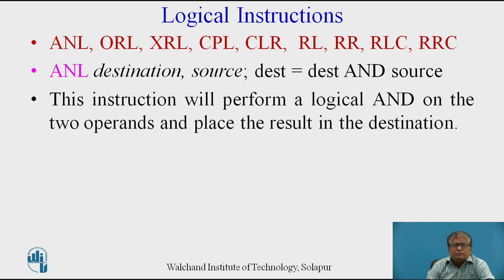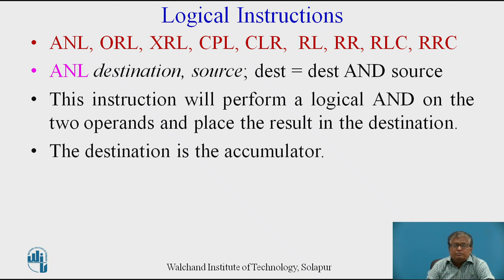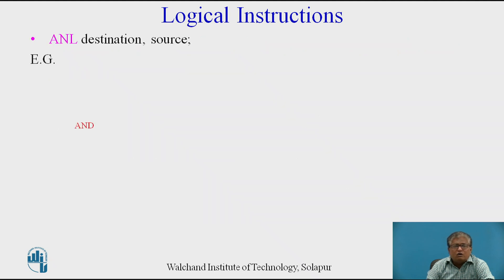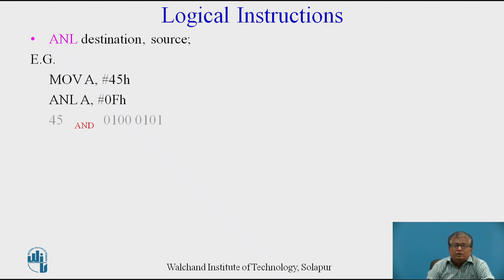This instruction performs a logical AND on the two operands and places the result in the destination. The destination must be the accumulator, that is register A. The source operand can be a register, memory, or an immediate value. ANL supports various addressing modes: register addressing mode, direct addressing mode, indirect addressing mode, and immediate mode. Example: MOV A, #45H then ANL A, #0FH — the AND operation between 45H and 0FH will take place.